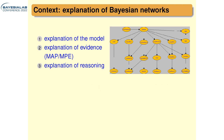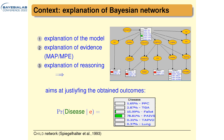Generally, when looking at explaining Bayesian networks, there are roughly three types of things you can explain: the model itself — why does the graph structure look like this, why are certain probabilities the way they are; explaining the evidence, which is basically a MAP or MPE query; and an explanation of reasoning, which has received the most attention in Bayesian network explanation research. What I show here is an example — a child network modelling the diagnosis of congenital heart disease in children.